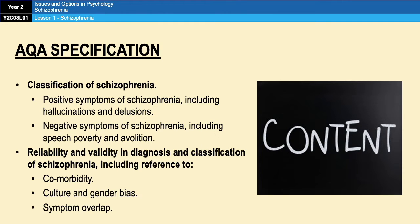We are going to be looking at positive symptoms of schizophrenia, negative symptoms of schizophrenia, and also a couple of diagnostic manuals very briefly. We're also going to look at the reliability and the validity of the diagnosis and classification of schizophrenia, including reference to comorbidity, culture and gender bias, and symptom overlap, mainly in the evaluation sections toward the end of the video.